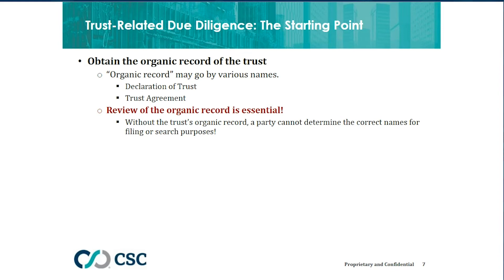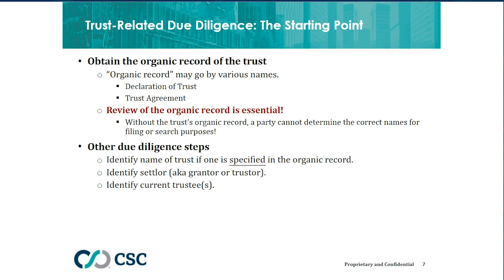In addition to getting access to the organic record of the trust, there are some other steps involved. Identify the name of the trust — whether the organic record specifies the name of the trust. Or if no name is specified, or if it's not clear whether it's specified, identify the settlor — the person or entity that created the trust. And identify any current trustees, especially if the trustees are the debtors — the people that have legal title to the collateral held in the trust. Those are the essential concepts and the initial due diligence process.